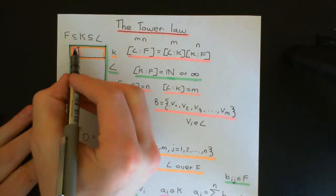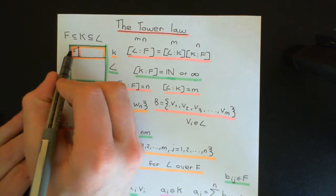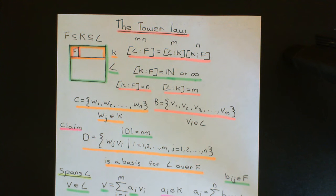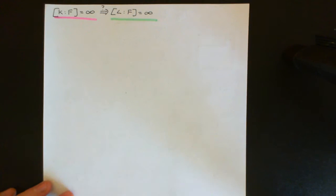I cannot find a finite set of vectors in K which spans the entire K — that is, taking all linear combinations of those vectors with coefficients from F spans all of K. That means I can find an infinite number of linearly independent vectors. The number of linearly independent vectors I can create is unbounded.